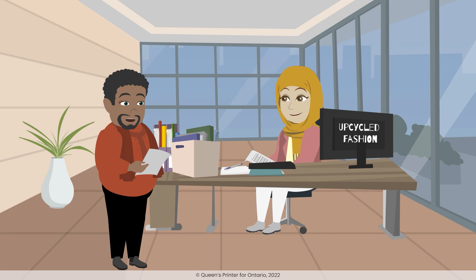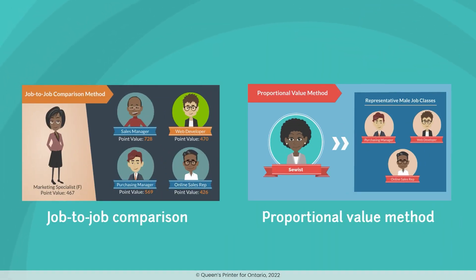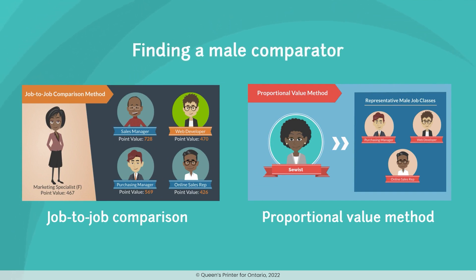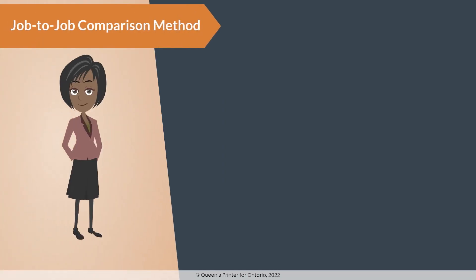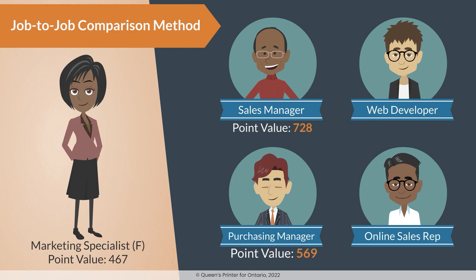What on earth does all that mean? Job-to-job comparison and the proportional value method are two different ways to match up female job classes with male job classes based on their point value. This is called finding a male comparator. Using the job-to-job comparison means that we compare the job class point value from Step 3 for each of our female job classes to the point values of our male job classes. Recall from Step 3 that point value represents the value that each job class contributes to our company's success.